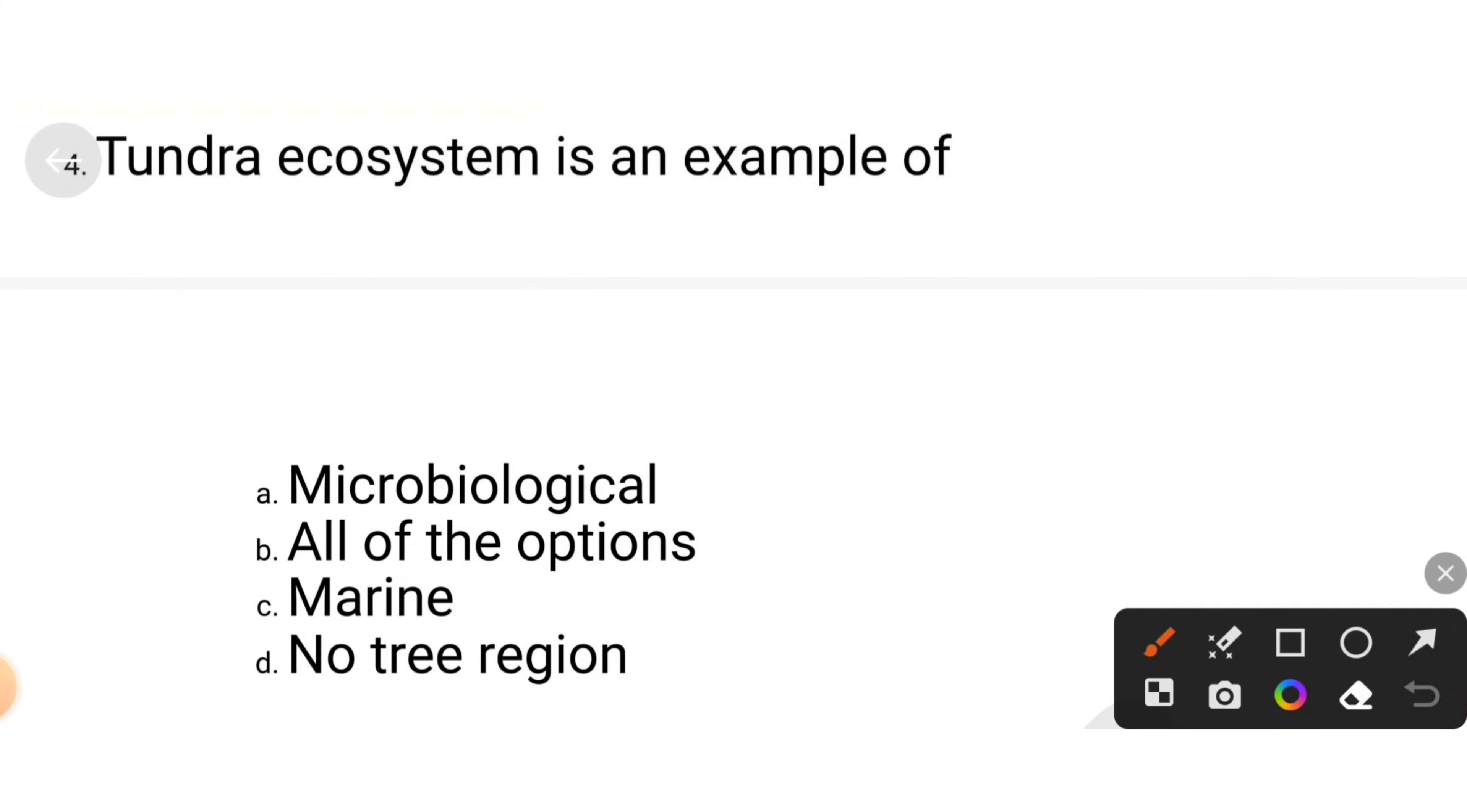Tundra ecosystem is an example of microbiological, all of the option, marine, or no tree region. Look, who has not studied ecosystem topics, go to the channel, definitely visit us. All of our lectures are covered by handwritten materials. If you like our videos, like, subscribe and share. Tundra ecosystem had no tree region.